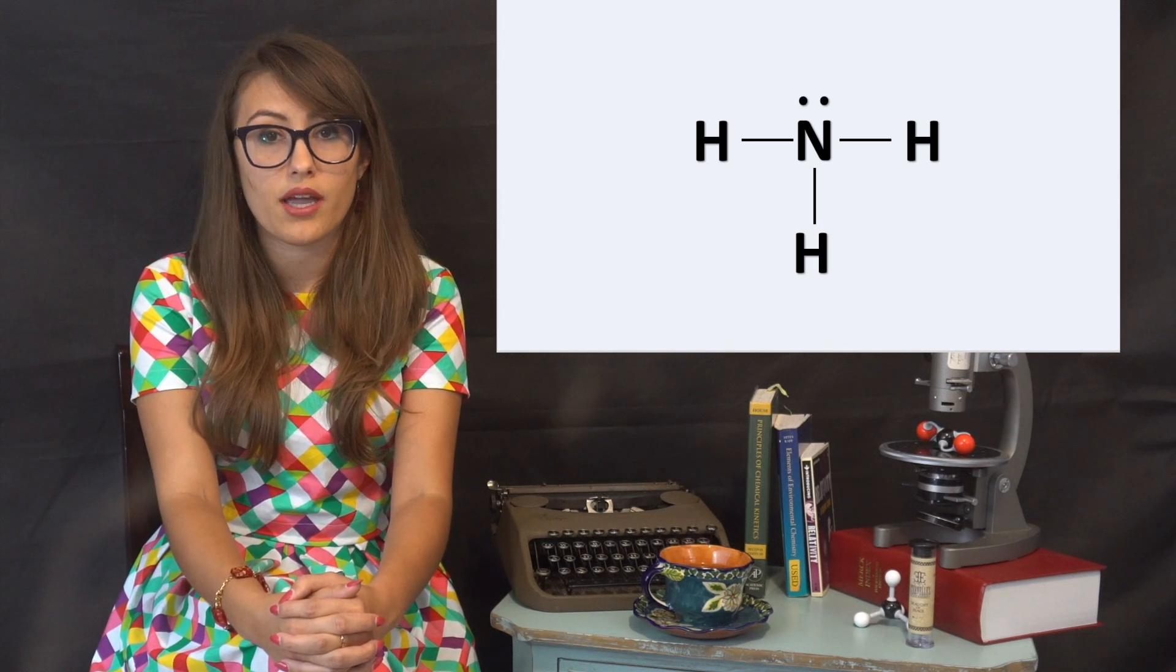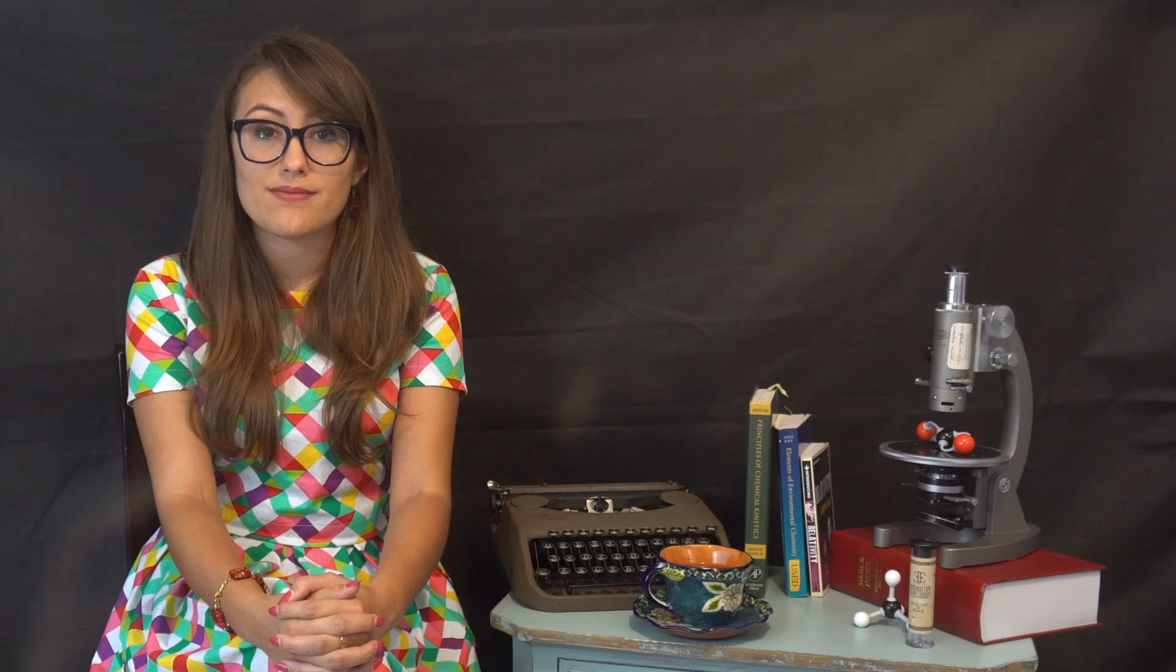If we draw the Lewis structure for NH3, we can see that it has three single bonds and a lone pair, which means it has four electron groups. In addition, double and triple bonds only count as a single electron group.